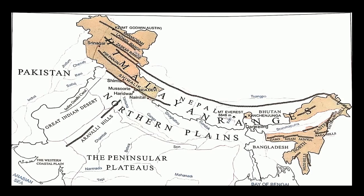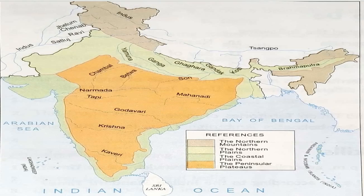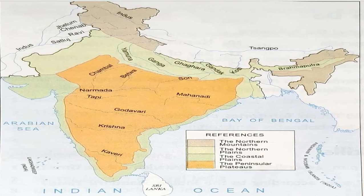Several big rivers originate from the Himalayas, as is clear from the map, and most of them flow through the northern plains. Rivers like the Yamuna, the Ganga, the Ghagra, the Gandak, the Kosi, and the Son flow through the northern plains and fall either into the Bay of Bengal or the Arabian Sea.